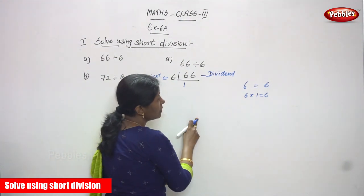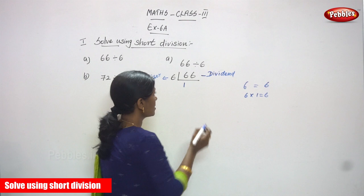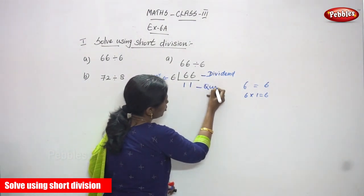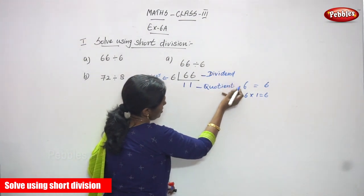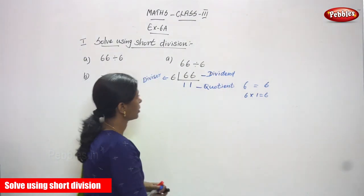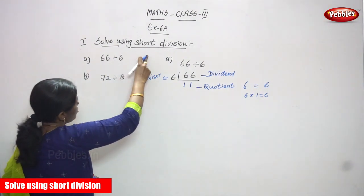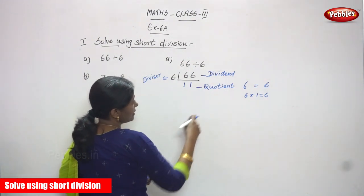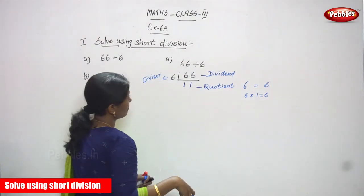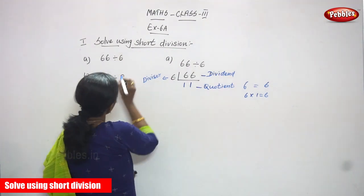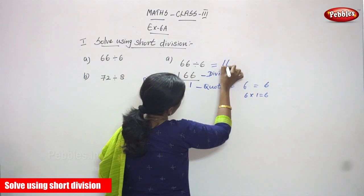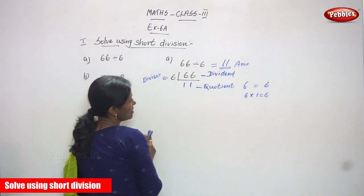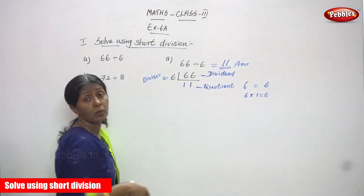Compare 6 ones with 6 — both are equal. Again, 6 ones are 6. So this is the quotient. What is the answer? The remainder is 0. For 66 divided by 6, the answer is 11. So 11 is the quotient and the right answer for this question.